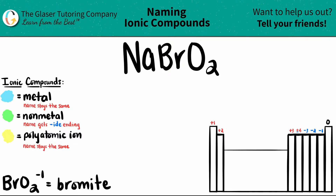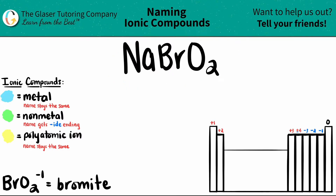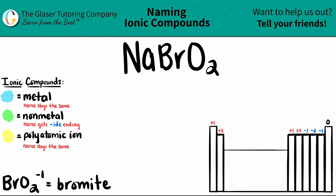Today we are going to be finding the name of the ionic compound NaBrO2. Just a little trick here: if you have three or more different elements in your ionic compound like we do here, you know that you have at least one polyatomic ion.